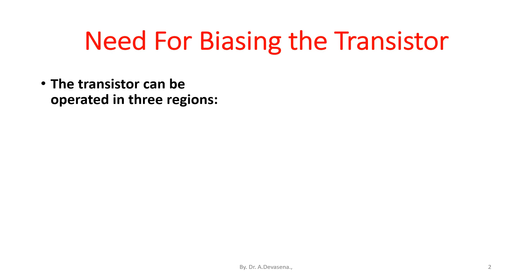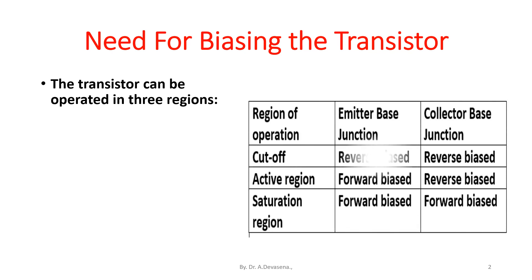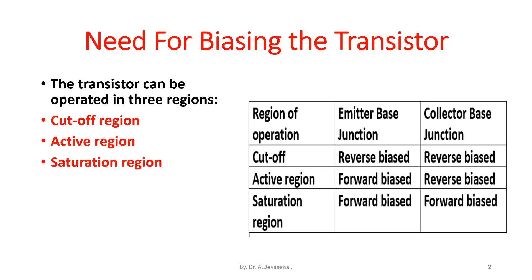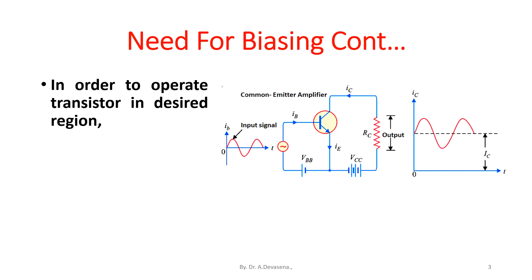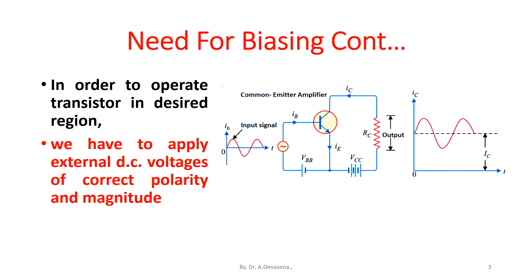The transistor can be operated in three regions: the cutoff region, active region, and saturation region. In order to operate the transistor in the desired region, we have to apply external DC voltages of correct polarity and magnitude to the two junctions of the transistor.